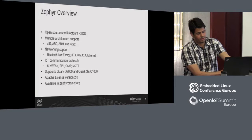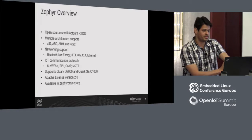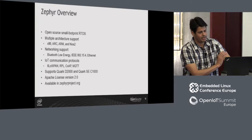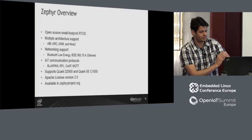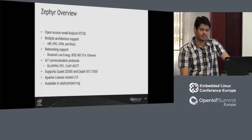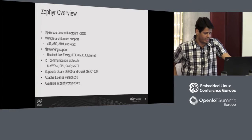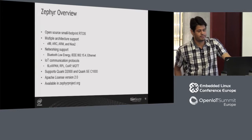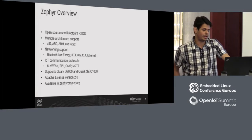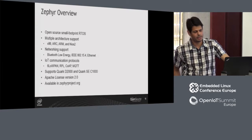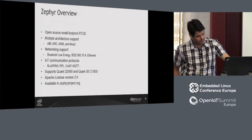Now talking about how we did it with Zephyr. Zephyr is an open source RTOS with a very small footprint. It supports a lot of architectures and networking, like Bluetooth Low Energy, IEEE 802.15.4, and Ethernet. It also supports IoT communication protocols like 6LoWPAN, RPL, CoAP, and MQTT.